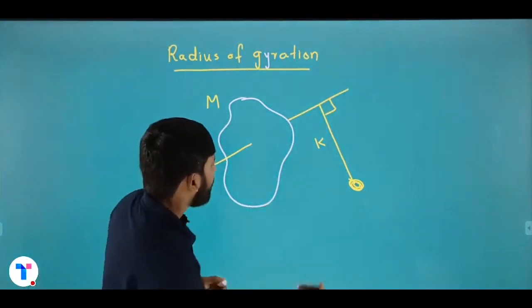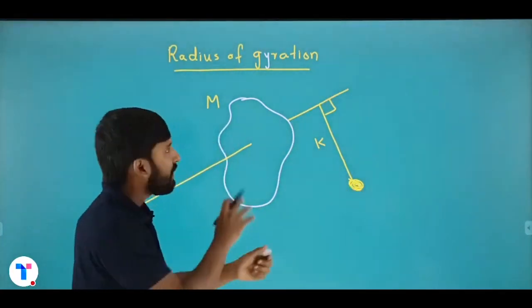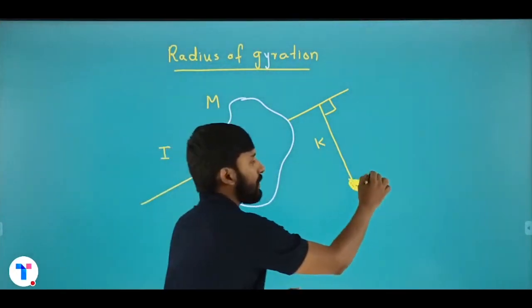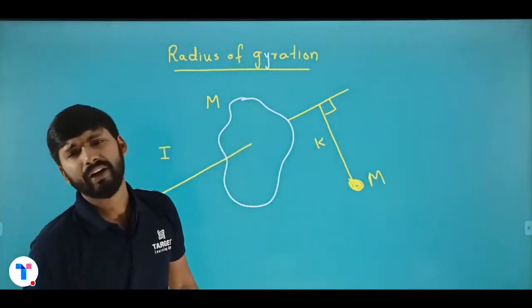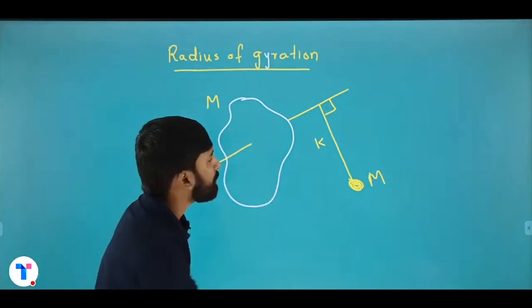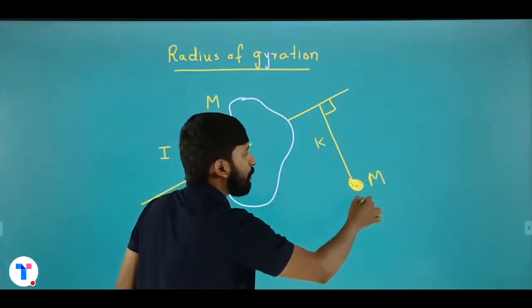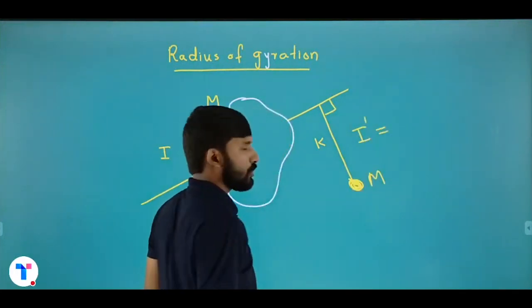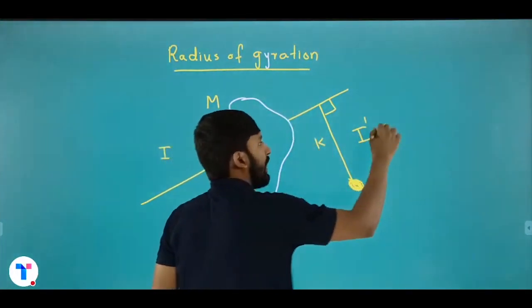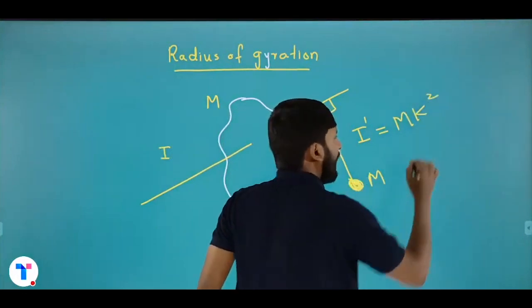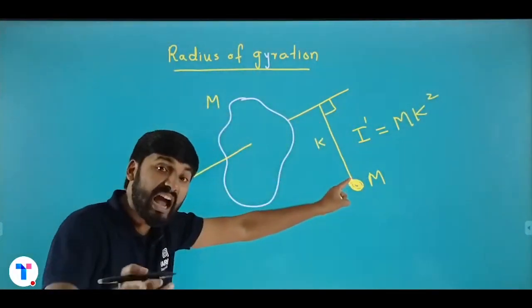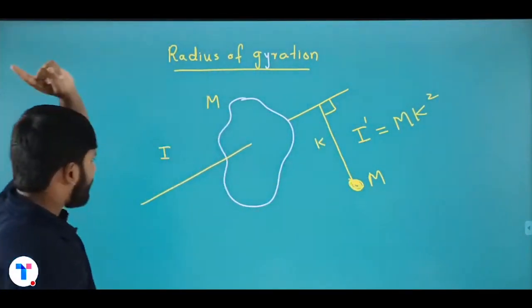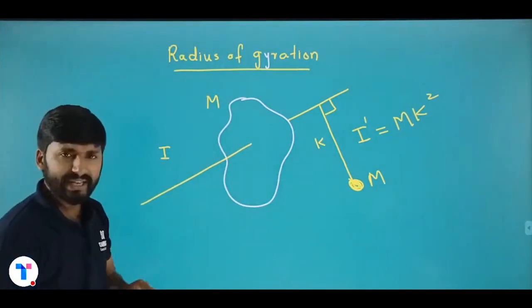The other axis is the same. So what will be the moment of inertia of this body about this axis? That will be I dash is equal to mass into distance in the square, M into K square. The moment of inertia is I equal to MK square.